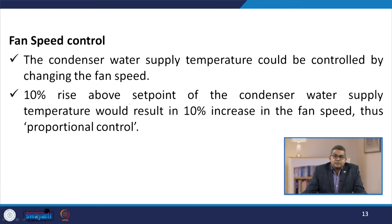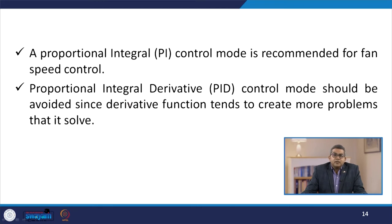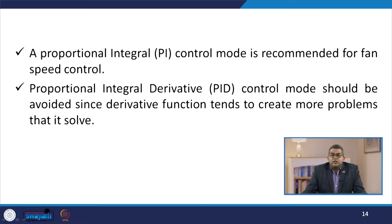Fan speed control: the condenser water supply temperature can be controlled by changing the fan speed. A 10 percent rise above the set point of condenser water supply temperature would result in a 10 percent increase in fan speed — proportional control. A proportional-integral, or PI, control mode is recommended for fan speed control. The PID control mode should be avoided, since the derivative function tends to create more problems than it solves.